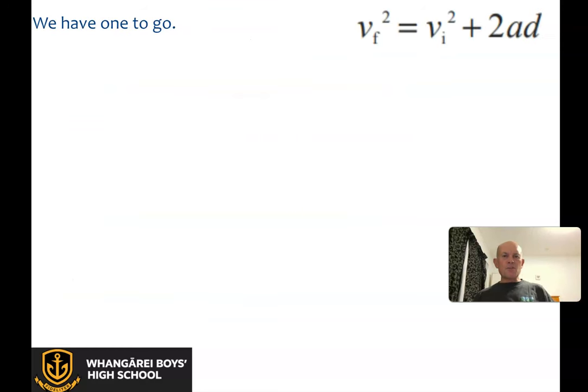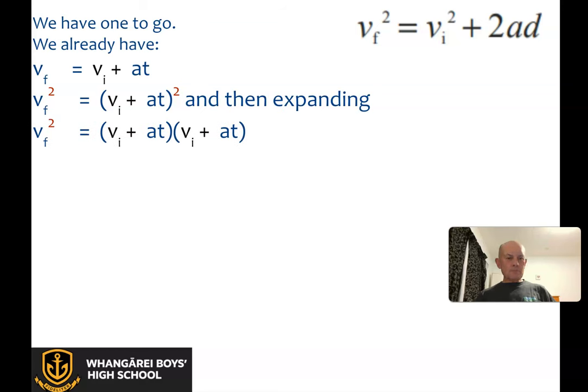We have one to go. We already have vf = vi + at, and all we need on the left side is a square. We square both sides: vf² = (vi + at)². Expanding: vf² = vi² + at·vi + at·vi + a²t². I know we're supposed to do it as FOIL, but I did it slightly differently—first vi², then the inner and outer terms, plus the last a²t². The order is not that important.